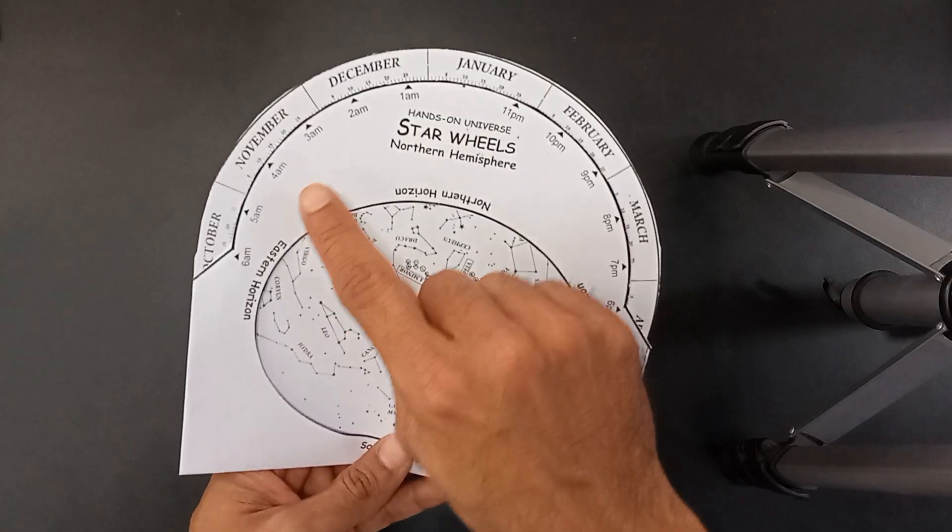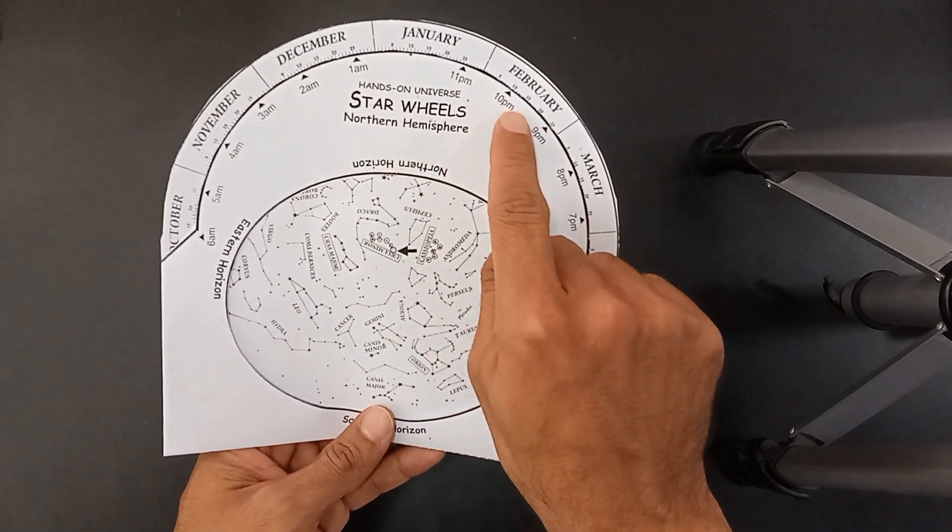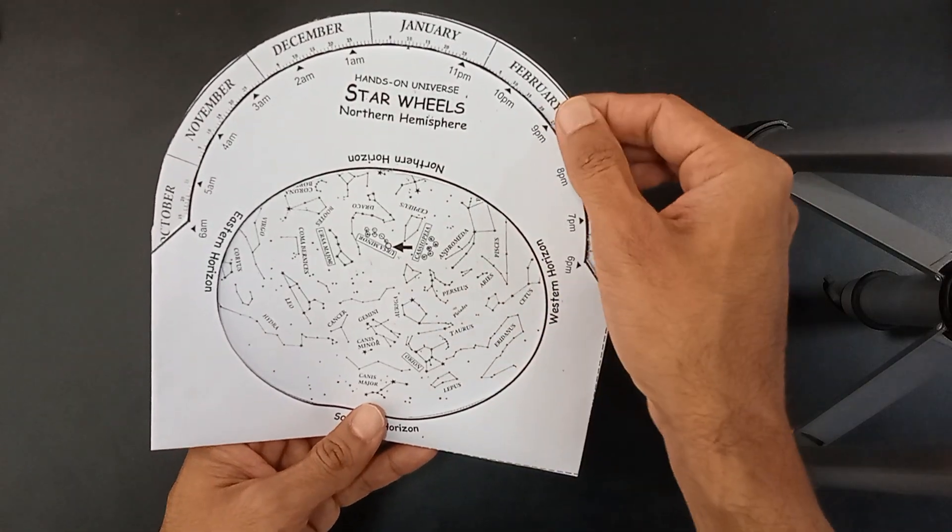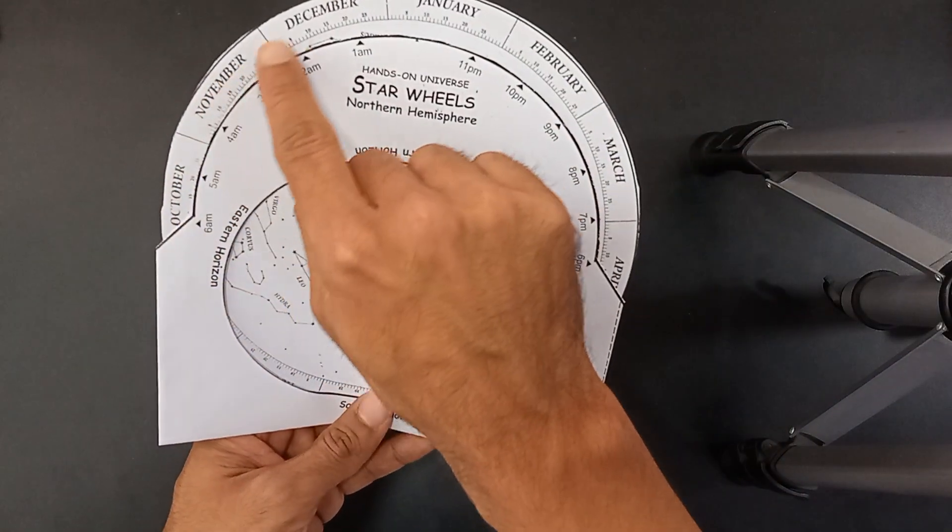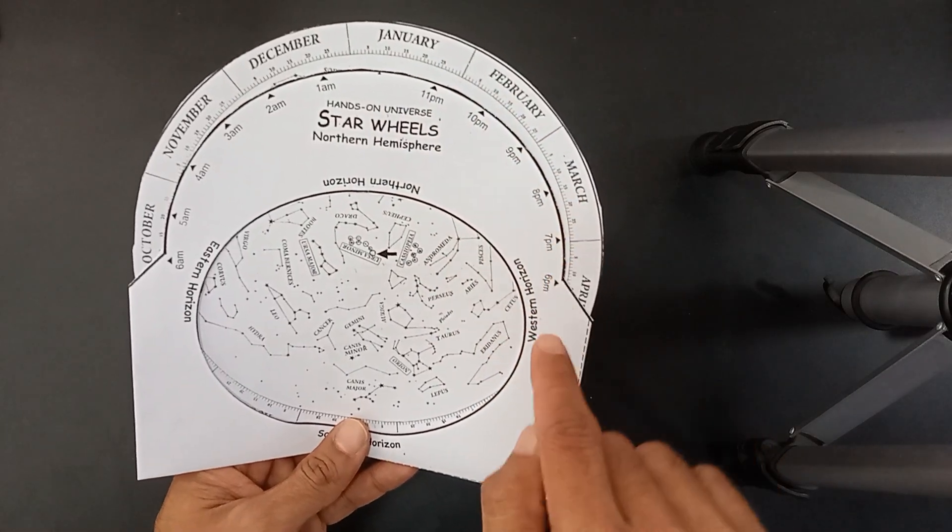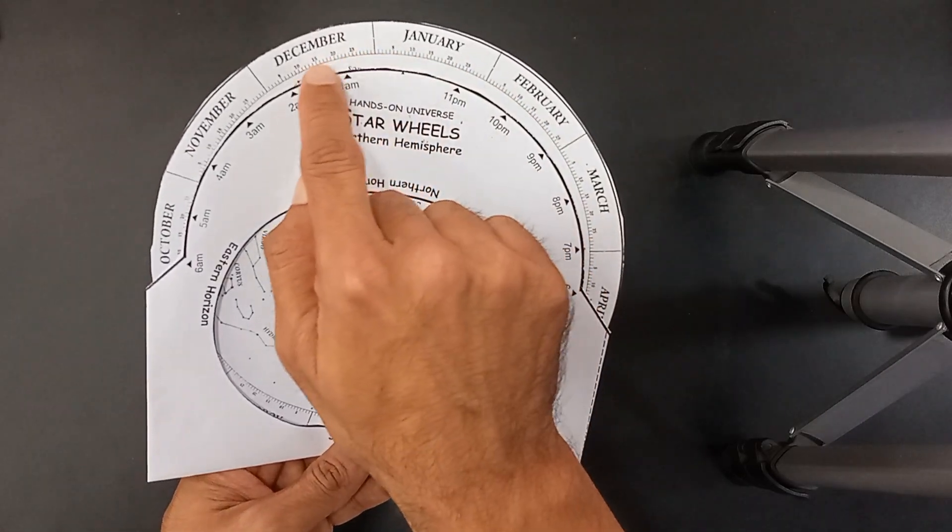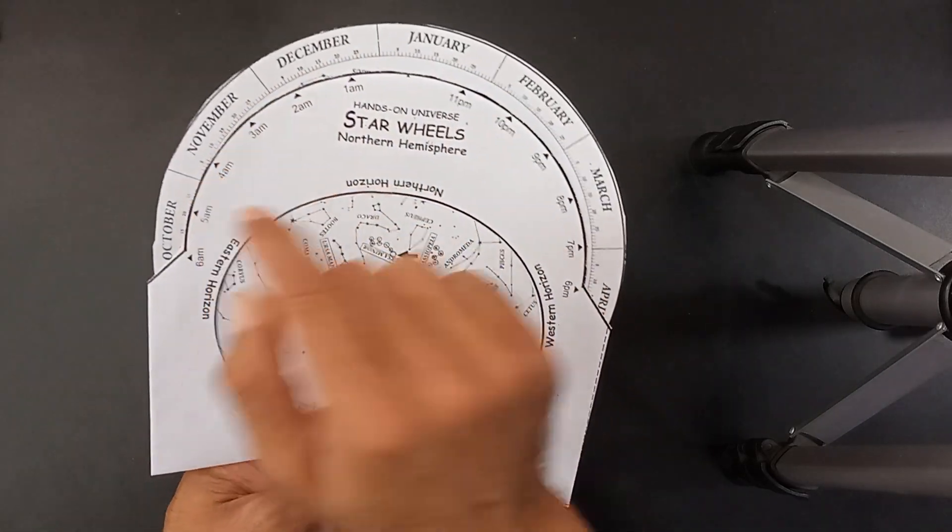You can see that there is clock time marked over here. And you can also see that there are months marked over here. And right below months, there are dates. Follow my finger. You will see there are dates.